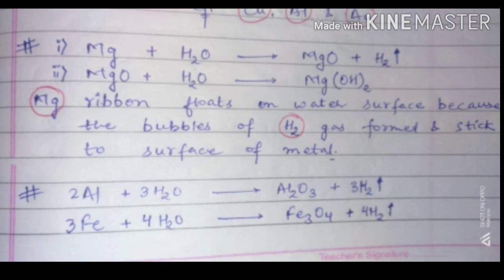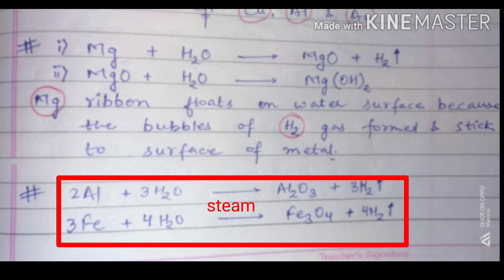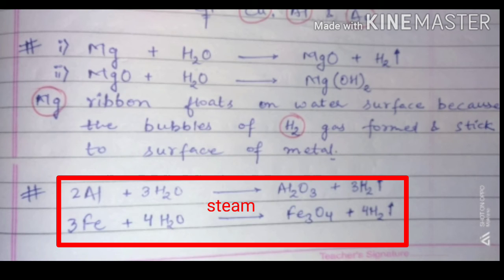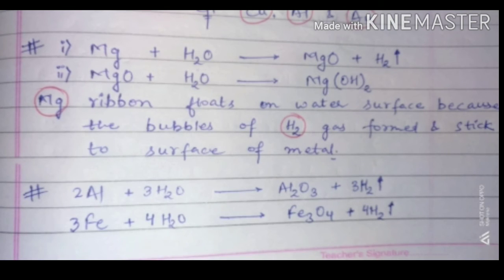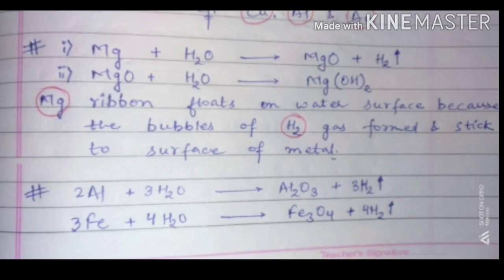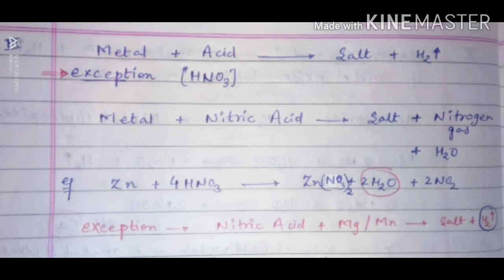Aluminium and iron react with water and form metal oxide and hydrogen gas — they do not form metal hydroxide. The third chemical property of metals is that metals react with acid. As discussed earlier, metal reacts with acid and forms salt and hydrogen gas.